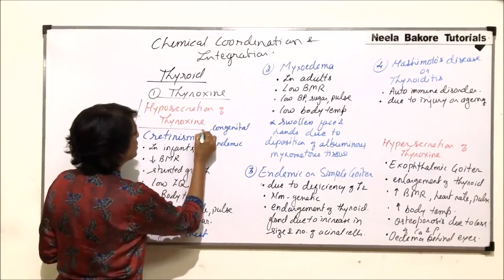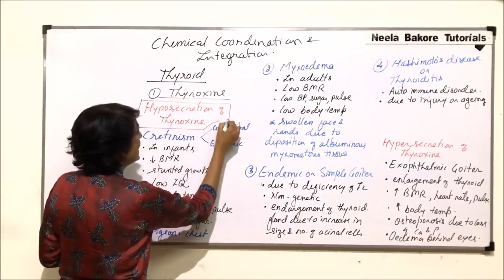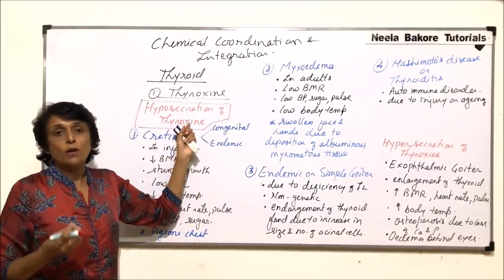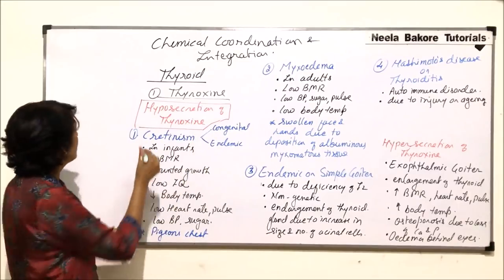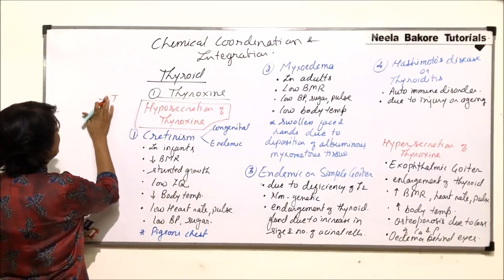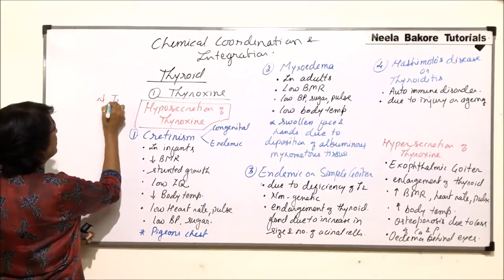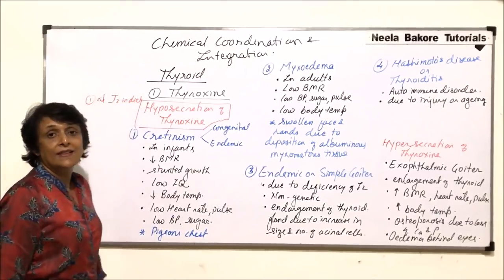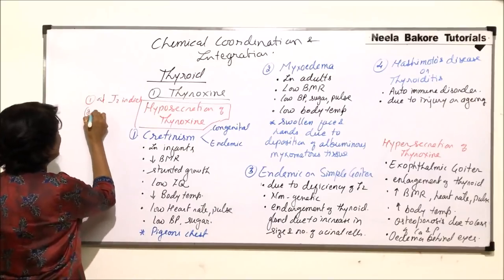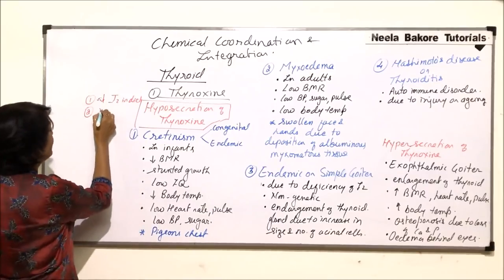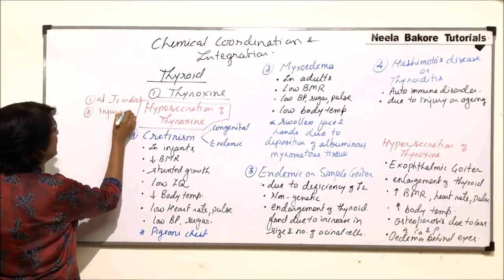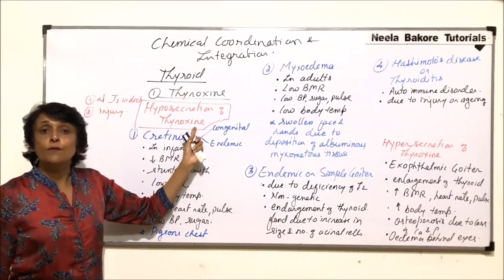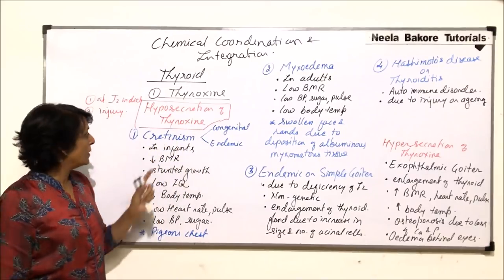Hyposecretion means there is less production of thyroxine. What could be the reasons? Number one reason could be less iodine in diet. The other reason could be some kind of injury to the gland, because of which the secretion of the hormone is less than normal.